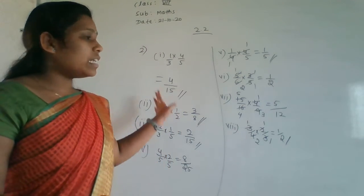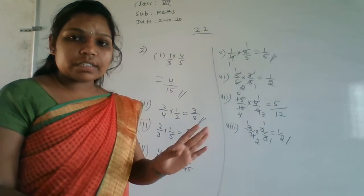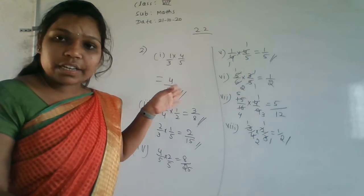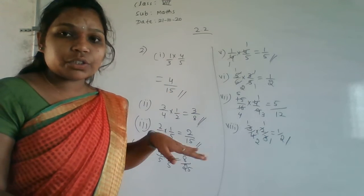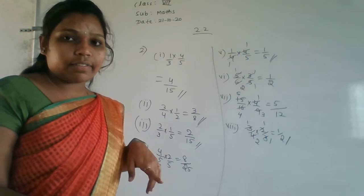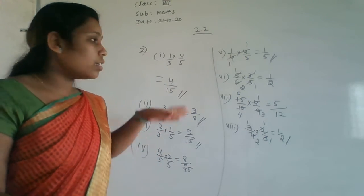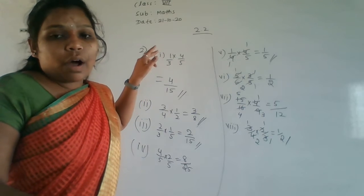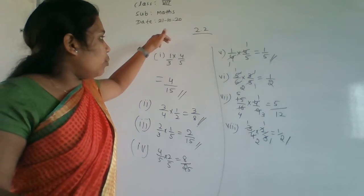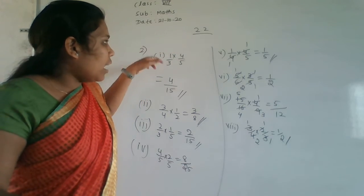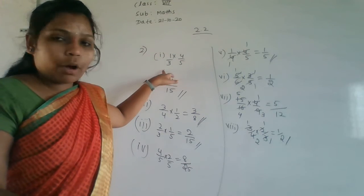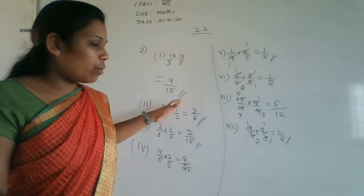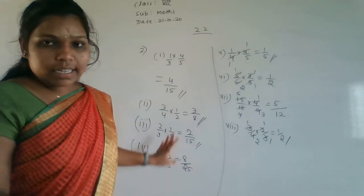To summarise the method: first check if cancellation is possible. If yes, cancel the values. If no cancellation is possible, directly multiply numerator × numerator and denominator × denominator to get the answer in simplest form.